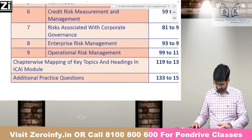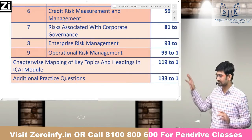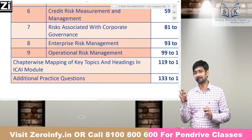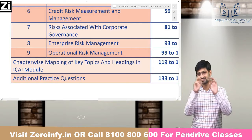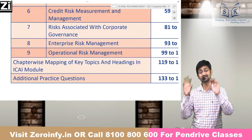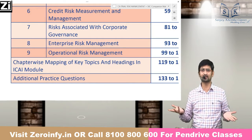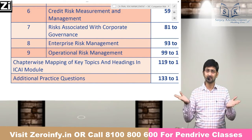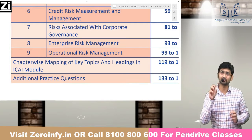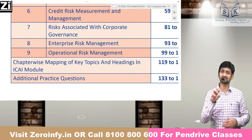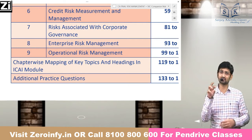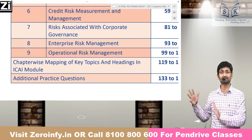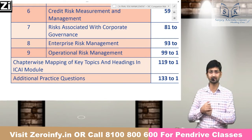We have something separately called chapter-wise mapping of the key topics and headings, where you can make your chapter-wise mapping of the ICI pages — not only ICI's main broad headings, which are also shown in the contents. But additionally, where the key topics are, where questions are framed, and what language can be used to frame them — we've tried to include all of that in the mapping.